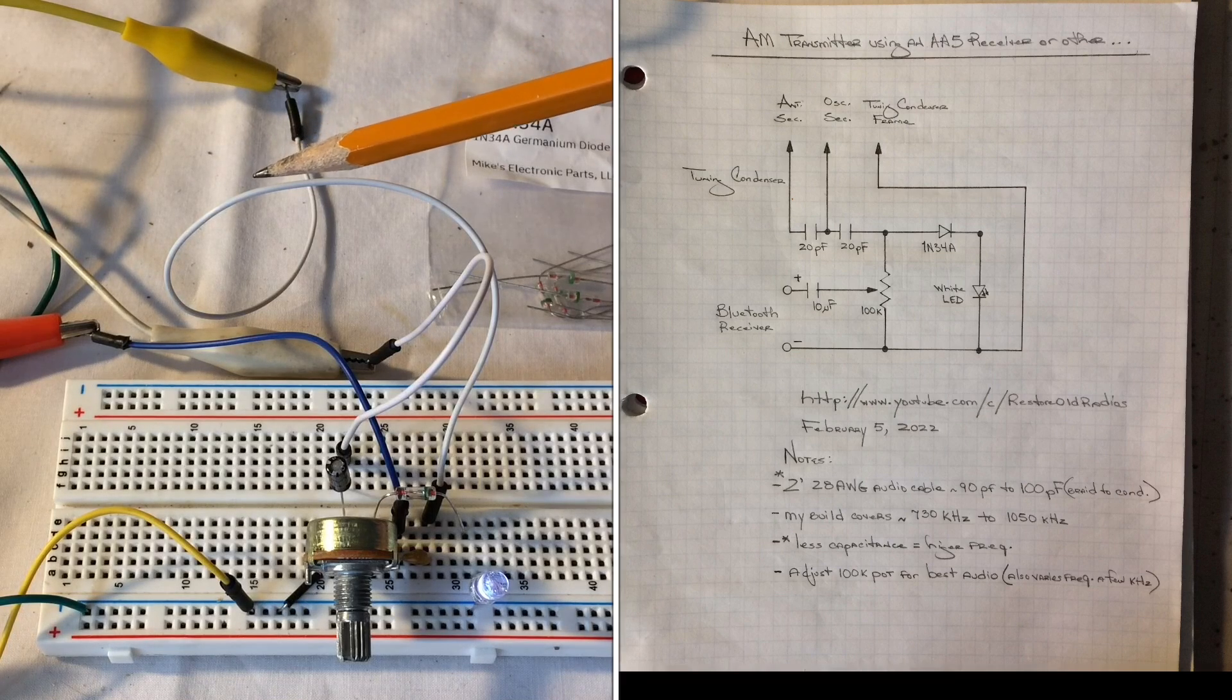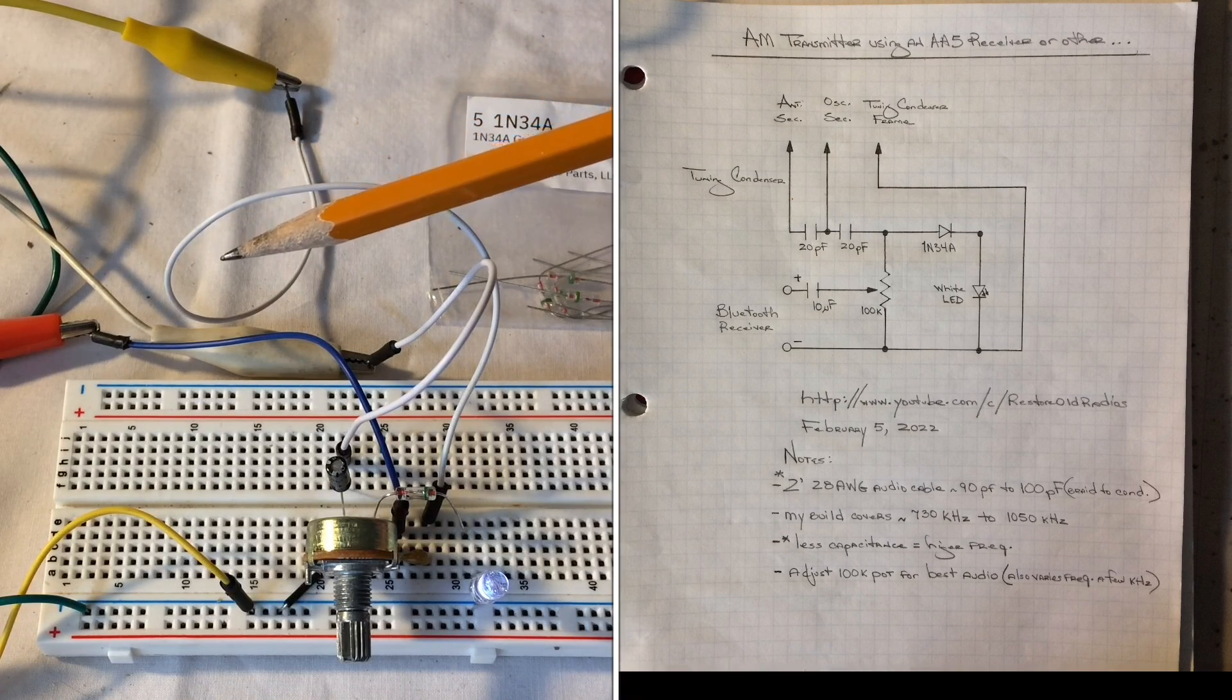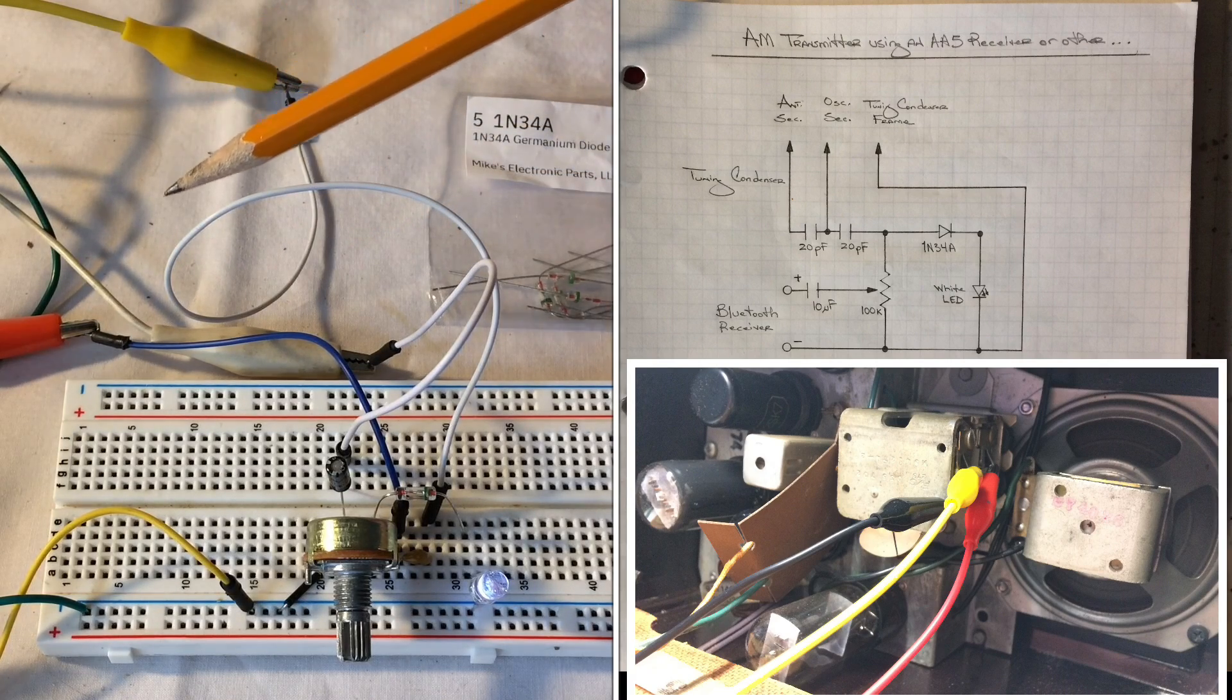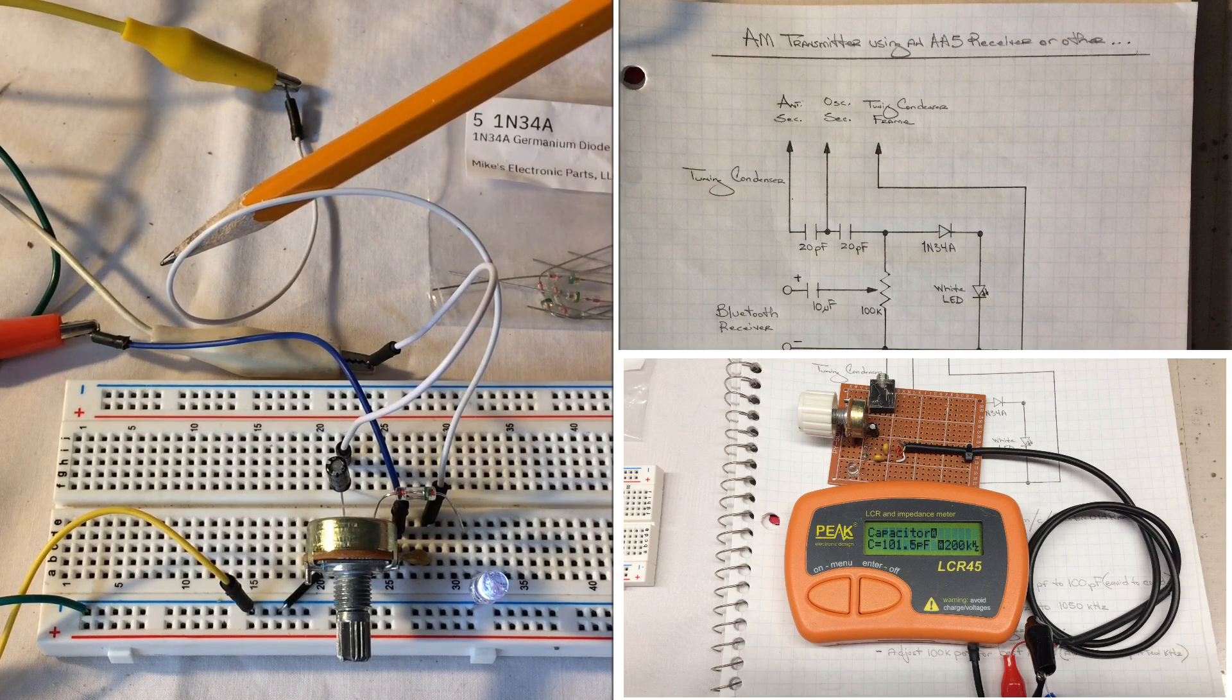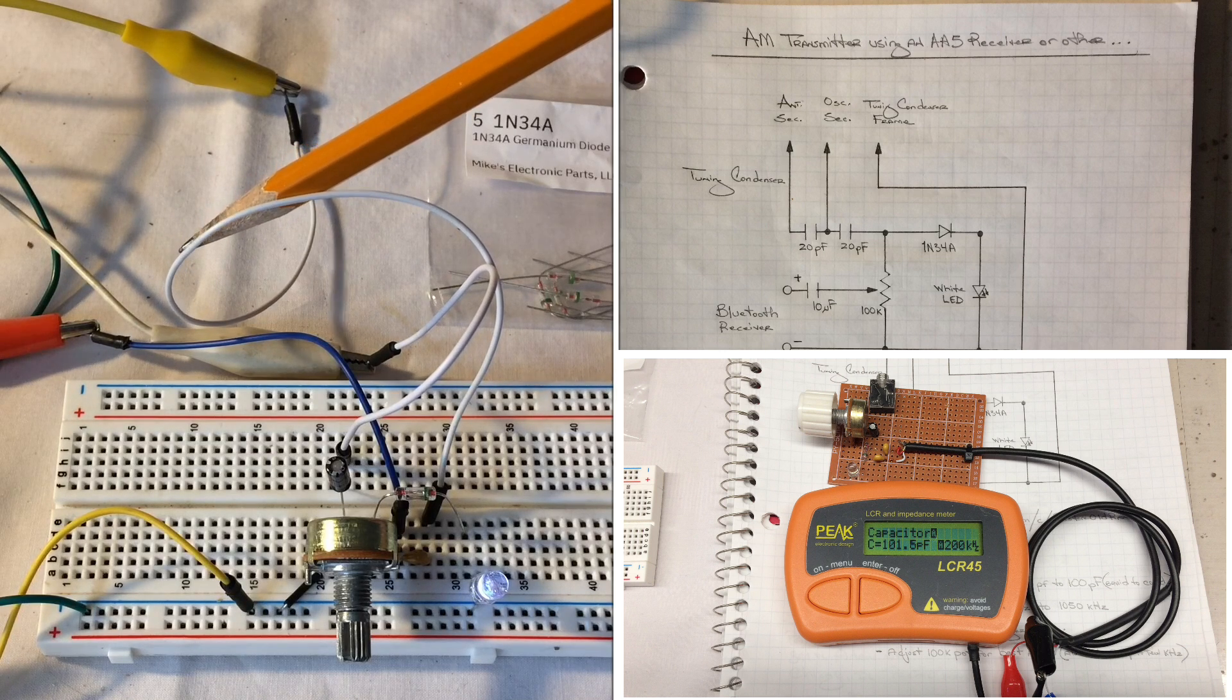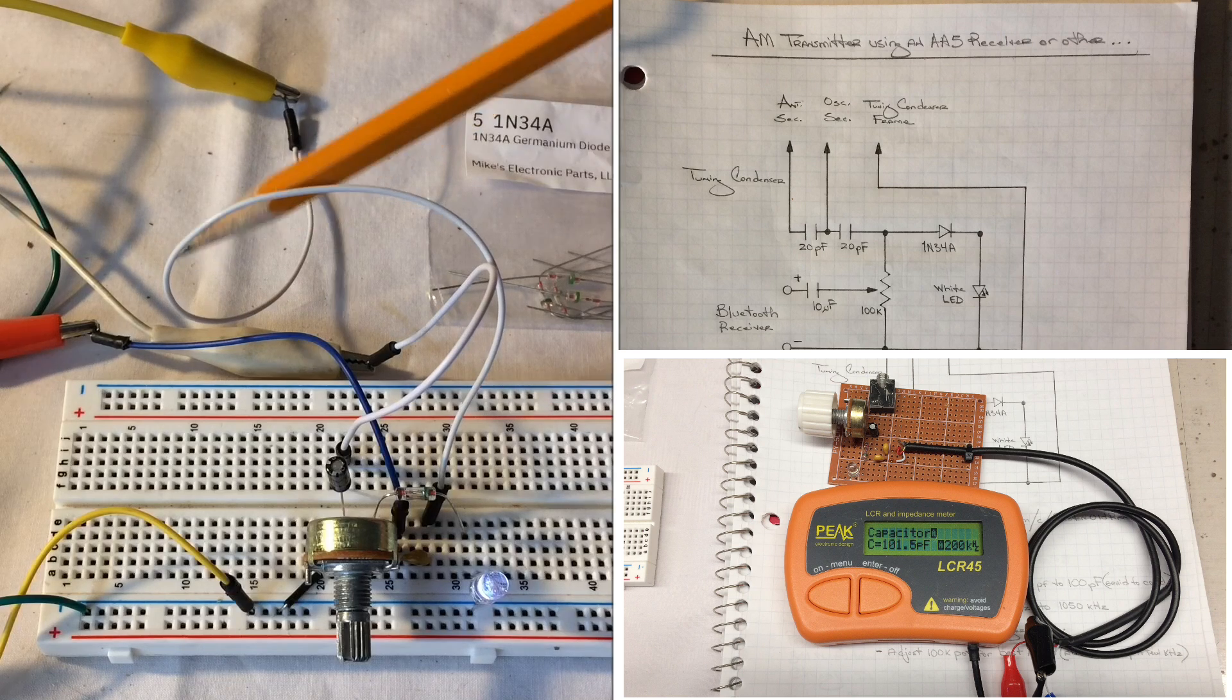So if you want to cover, let's say 1,000 kHz up to 1,600 kHz, use a design similar to this. Using the audio cable, in my case just a two-foot section 28 AWG, introduces about 90 to 100 picofarads of capacitance.